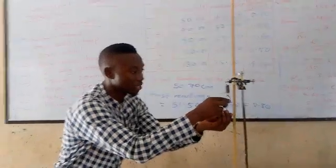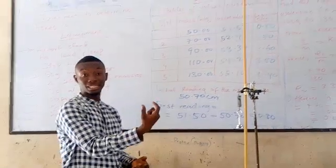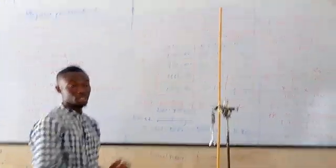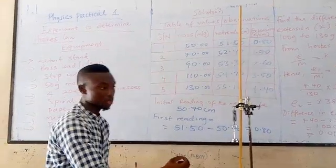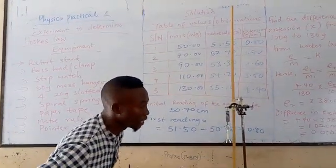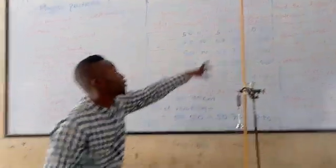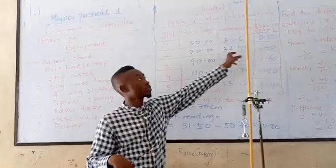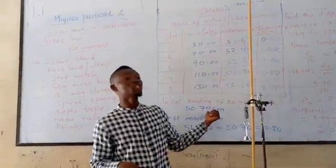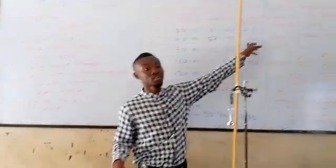Introducing the 20 grams slotted mass, you will find out also that it is extended a bit. So we are going to record the point where the extension has occurred. So from my view here, the second position of the pointer is at 52.40. So we will still do the same thing. We will still subtract from the initial position of the pointer. And we are getting the extension to be 1.70.